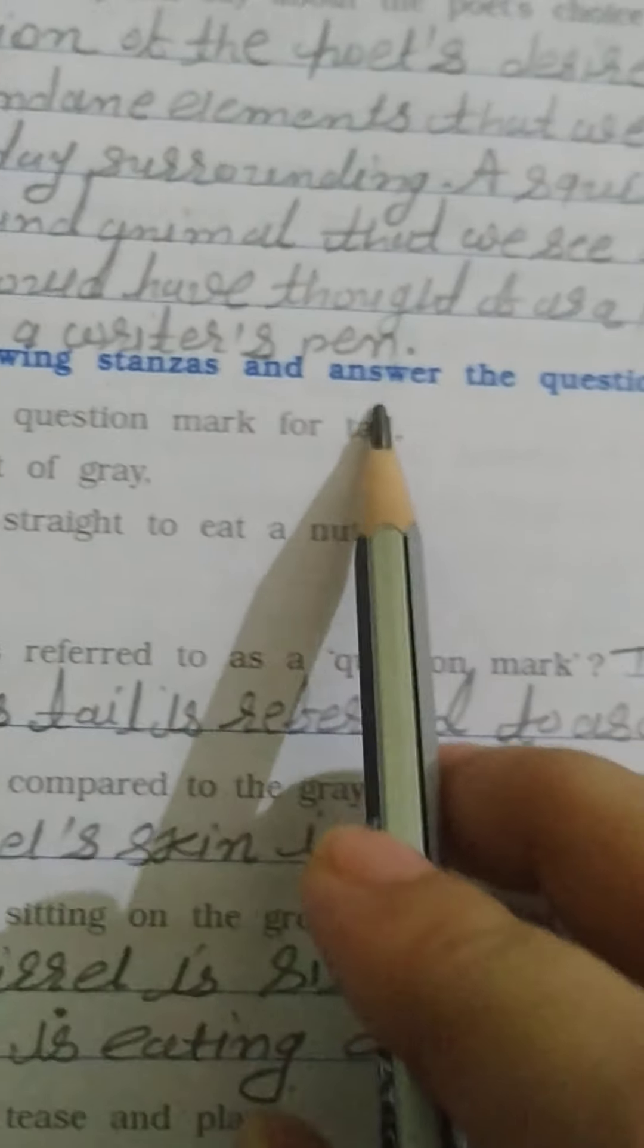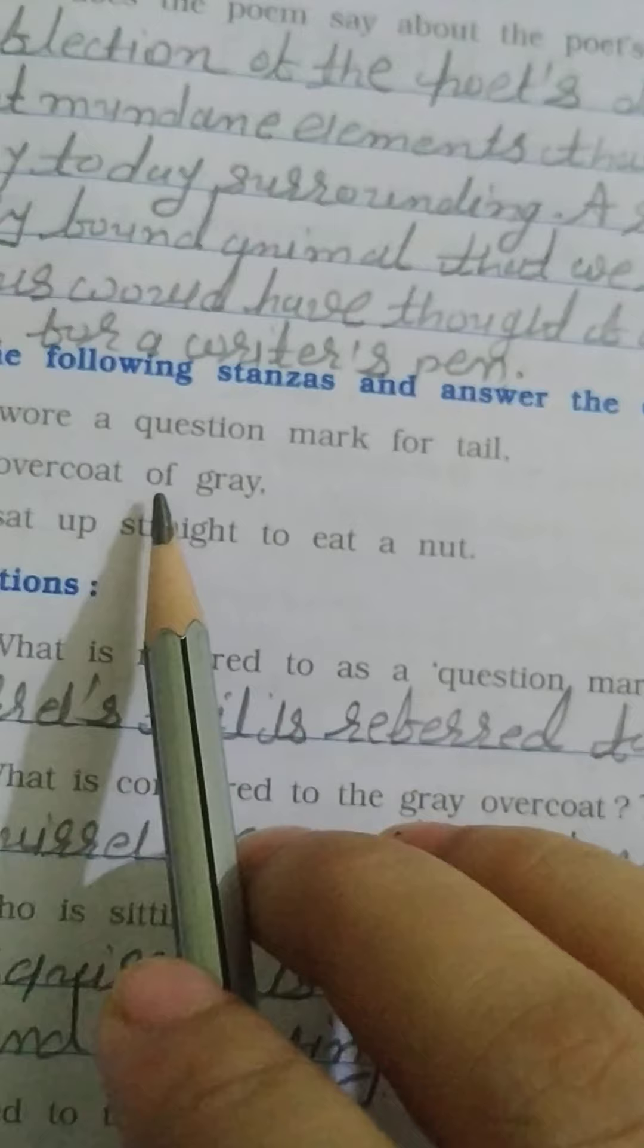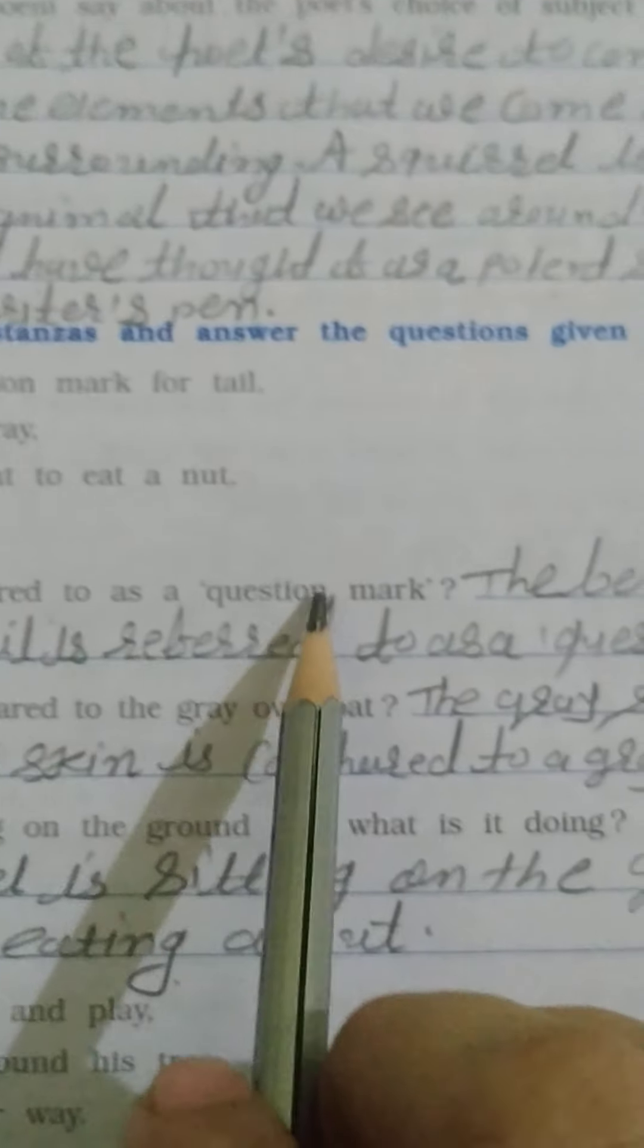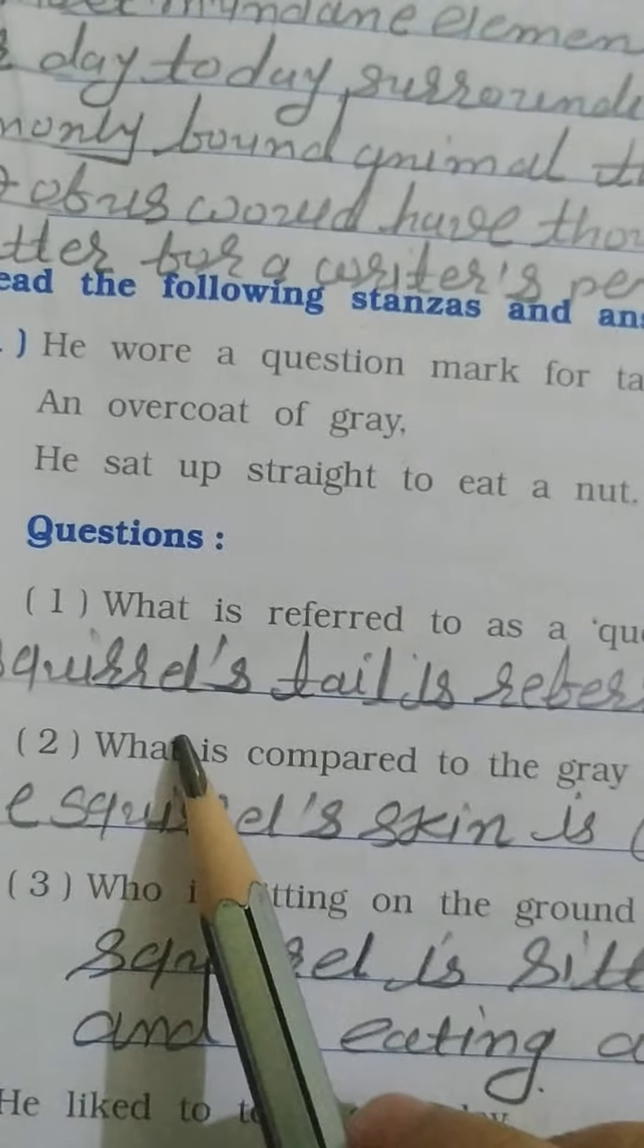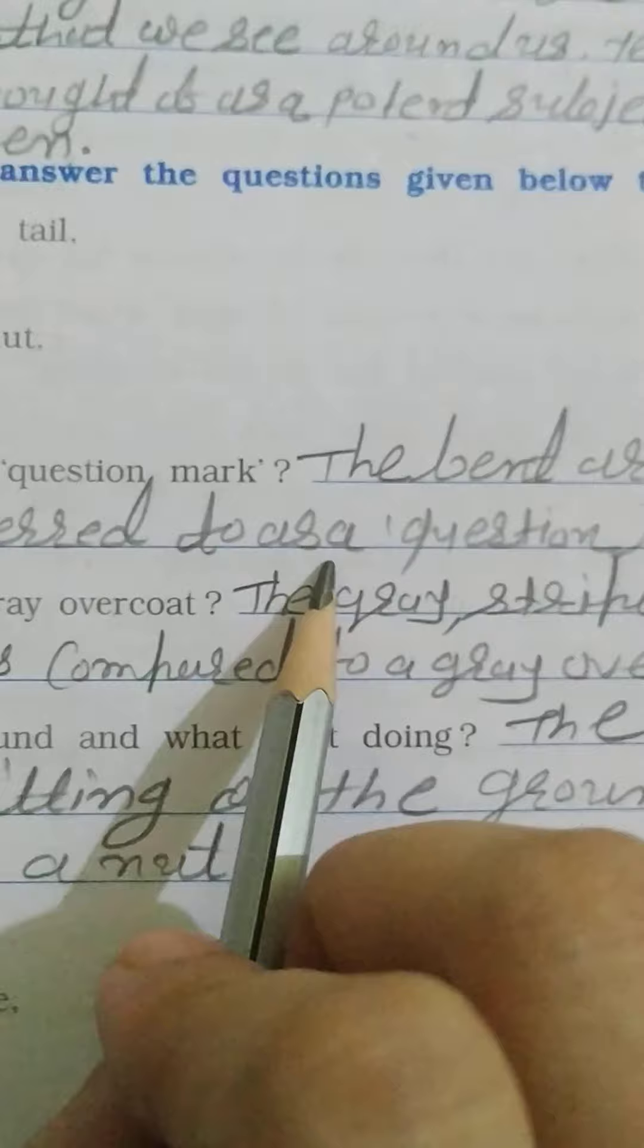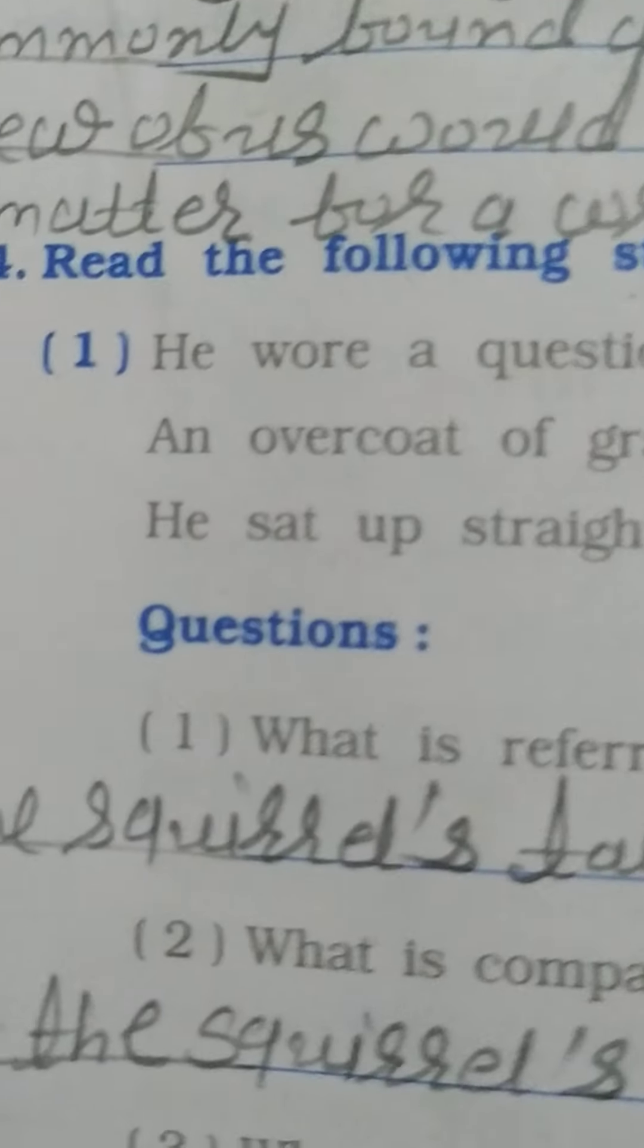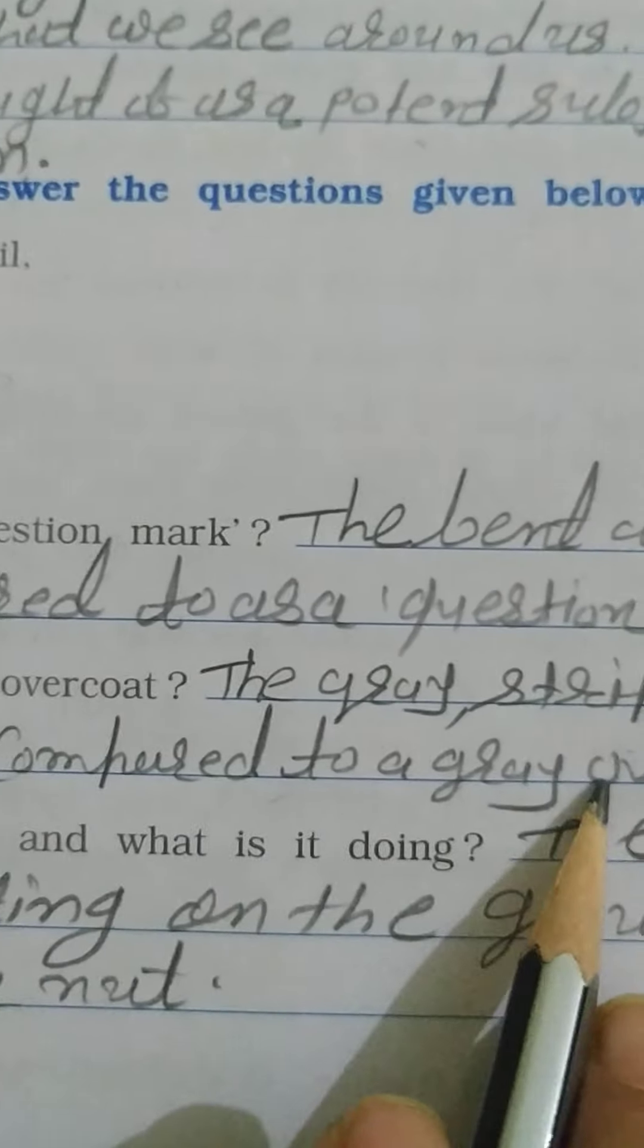Read the following stanzas and answer the questions given below them. He wore a question mark for tail and overcoat of grey. He sat up straight to eat a nut. What is referred to as a question mark? What is compared to the grey overcoat? The grey striped color of the squirrel's tail is a question mark. The squirrel's skin is compared to grey overcoat.